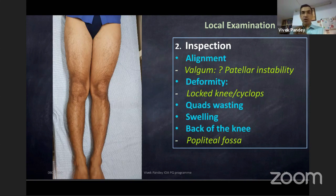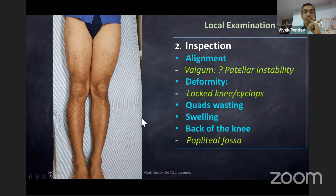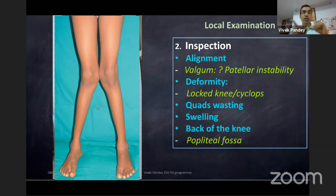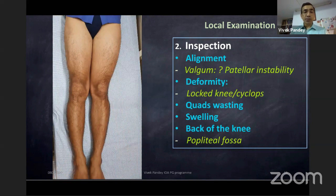A valgus alignment with a history of instability could indicate patellar dislocation. An adolescent girl with minimal trauma — climbing a stool or dancing — can hardly ever tear an ACL, so think more in terms of patellar instability. Also look for a locked knee — flexion deformity could be due to locked knee or cyclops lesion. Check for quadriceps wasting and swelling around or behind the knee.